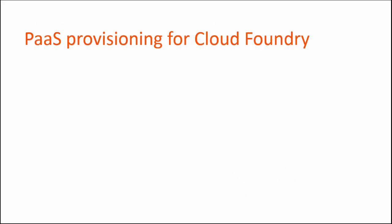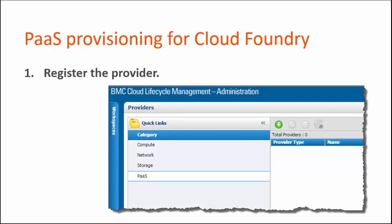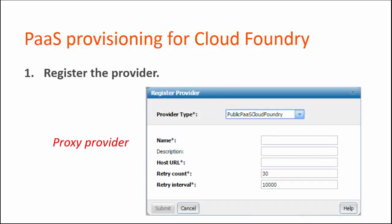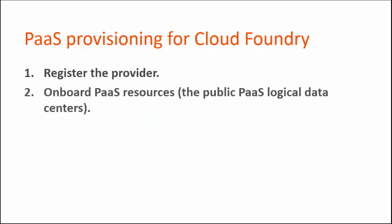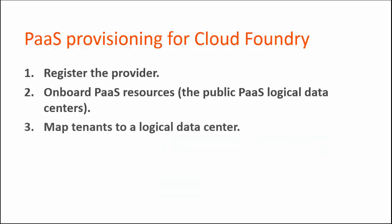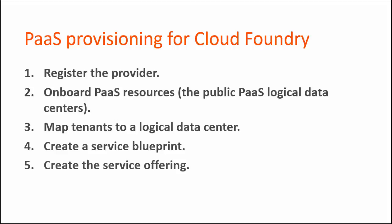Let's take a look at PaaS provisioning for Cloud Foundry. After you have set up Cloud Foundry, you must register the provider. Go to the provider's workspace on the administration console and set up two providers: the overall PaaS provider and the proxy provider. Then, on the resources workspace, you must onboard PaaS resources, or the public PaaS logical data centers. Next, you must map tenants to a logical data center. After that, you would create a service blueprint, and finally, the service offering. PaaS provisioning for Cloud Foundry is documented in detail at docs.bmc.com.